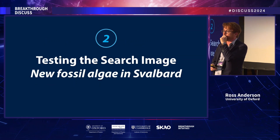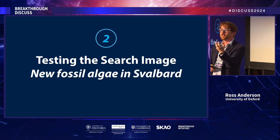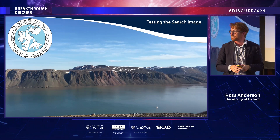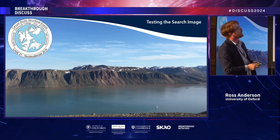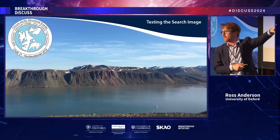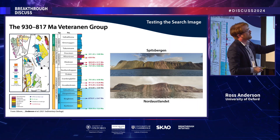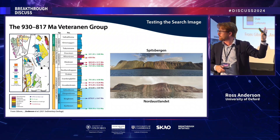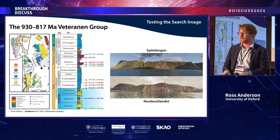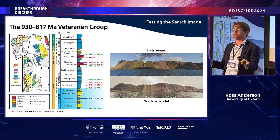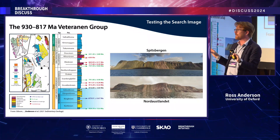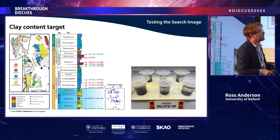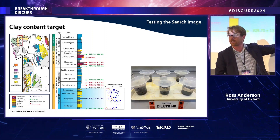For the second part of the talk, I want to go and test this search image. Can we use that clay-rich search image to find cool fossils in the Precambrian? This is Svalbard in the Arctic, which has rocks about a billion years old from a group called the Veteranian Group. This suite of rocks is five kilometers thick and mostly mudstones — a huge amount of rock to go looking for these tiny fossils.